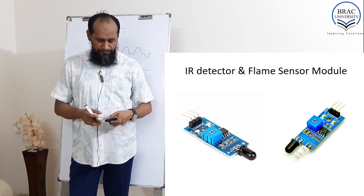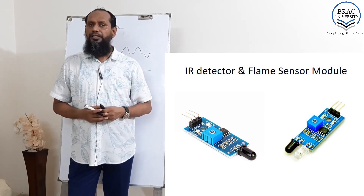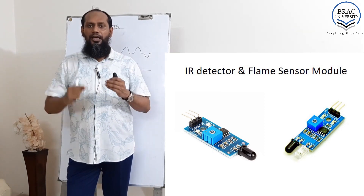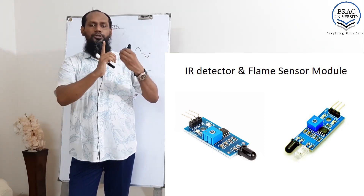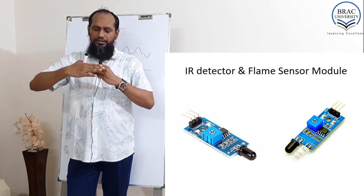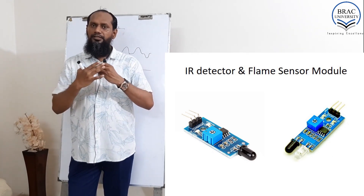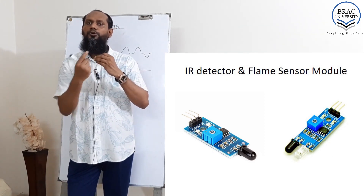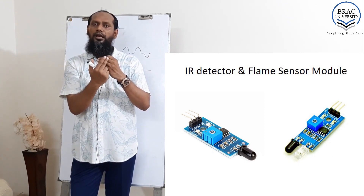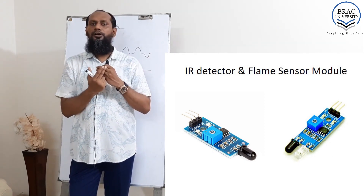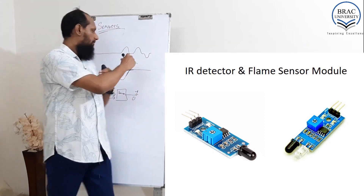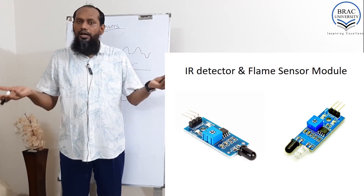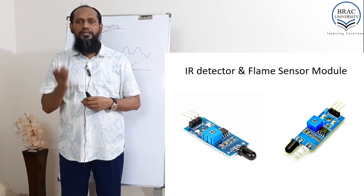This is also a digital sensor. Proximity means how near the thing is. If we put our finger near the sensor without touching it, infrared will reflect from our finger, and our finger will also produce some infrared. When our finger comes near the sensor, it will produce a voltage, and the sensor can be used as a switch or a proximity sensor.